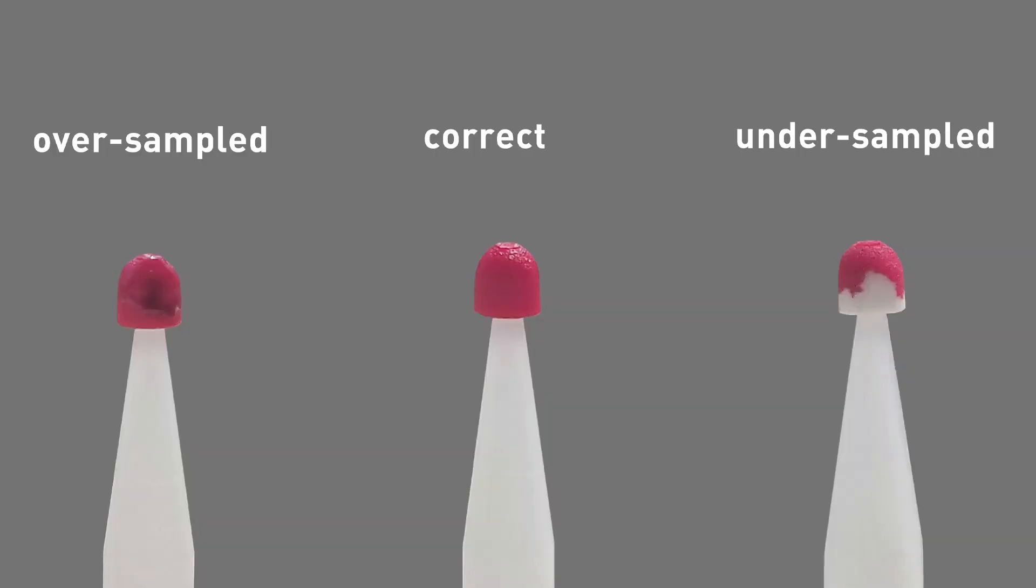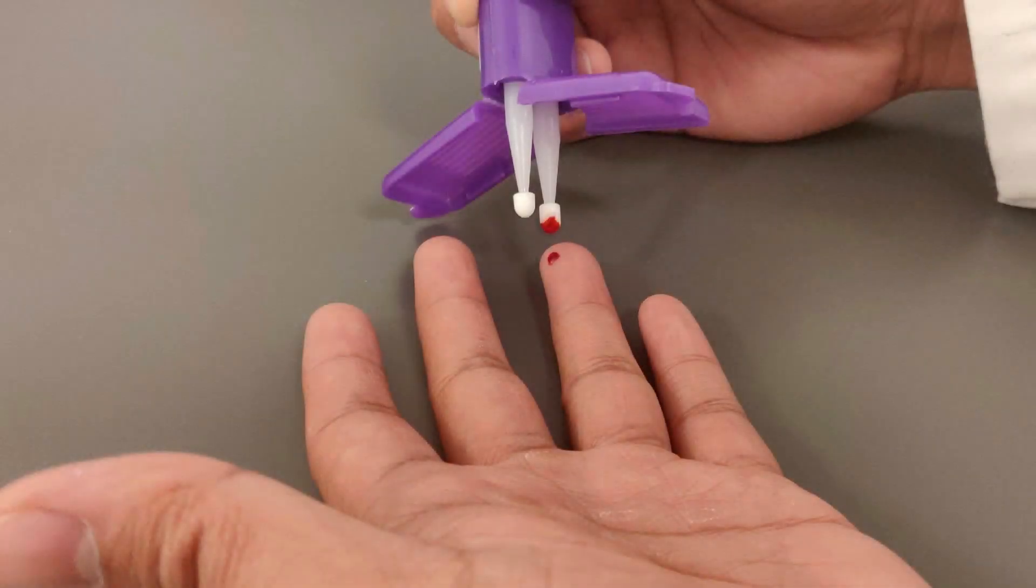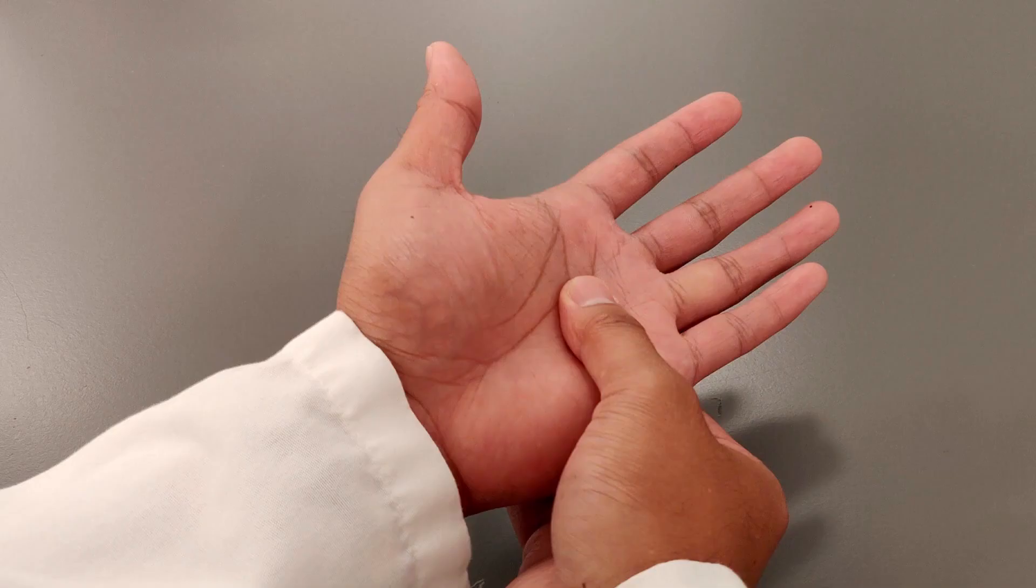To collect a sample that's just right without over- or under-sampling, follow these guidelines. Here's what an over-sampled and under-sampled meter tip looks like compared to a correct sample. If part of the meter tip remains white, that's under-sampling. Under-sampling can occur when you pull the mitra tip away from the blood drop too quickly or when there's not enough blood to fill the tip.